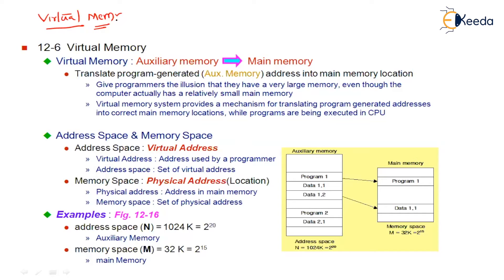In reality, virtual memory will not exist. Try to understand what is existing in the illusionary aspect and why it is not existing in the real aspect. Now, there is a secondary memory of the system — the secondary memory is equal to 1M. I do have a 1M secondary storage.